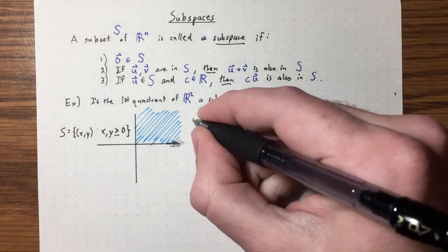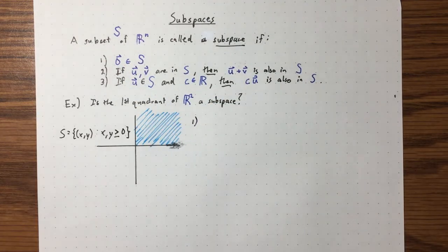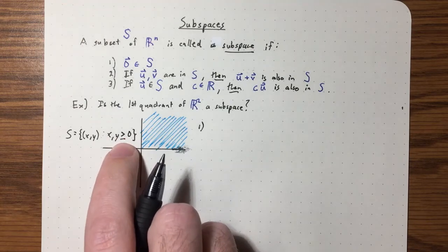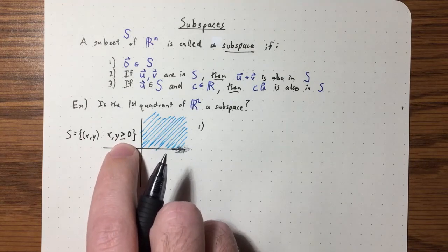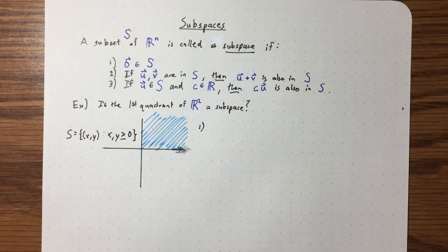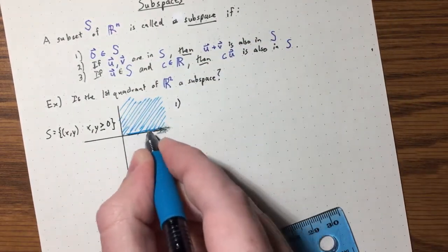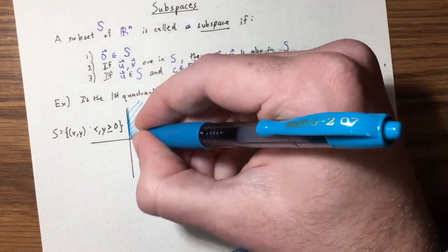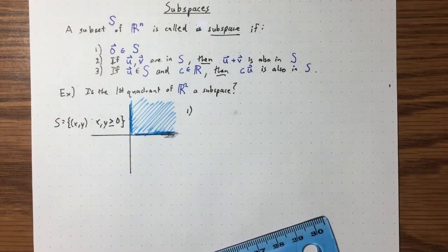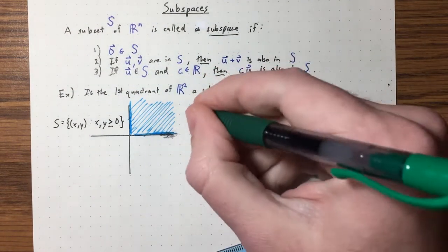Let's check. Condition 1: is zero in S? Yes, because zero comma zero satisfies both components being greater or equal to zero — it's the first quadrant including the X-axis and Y-axis. So condition 1 is good.